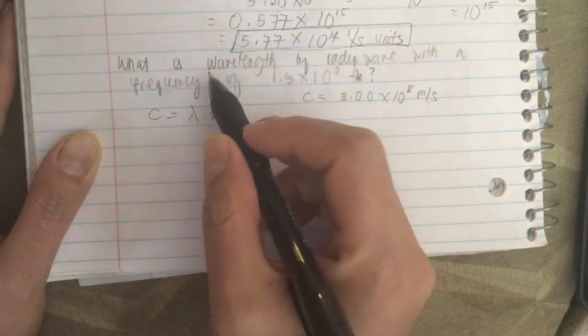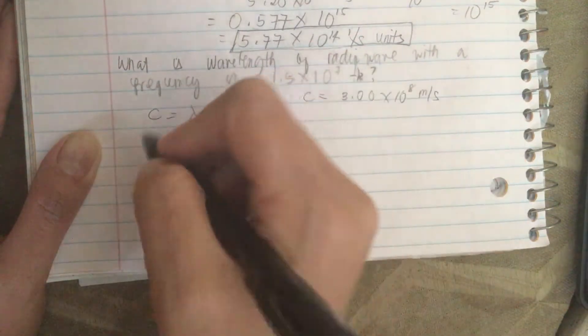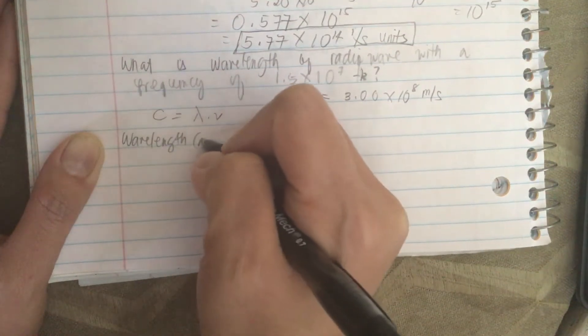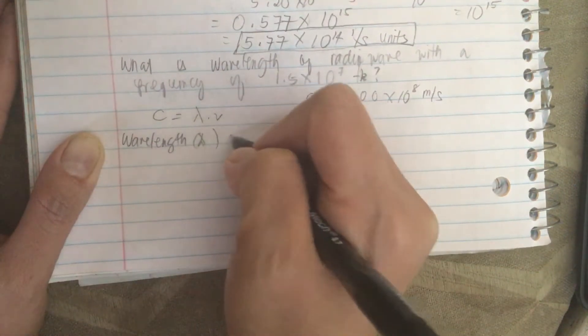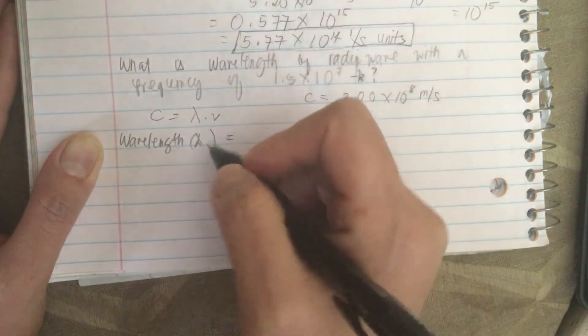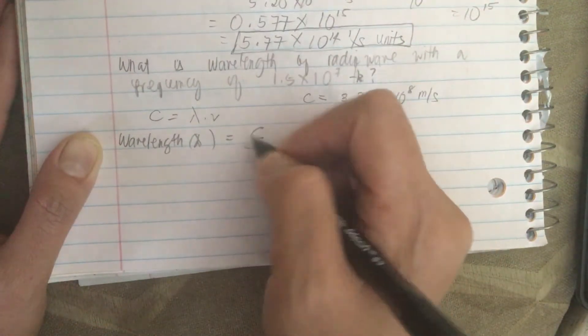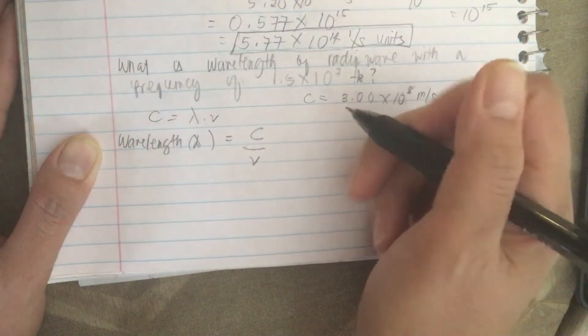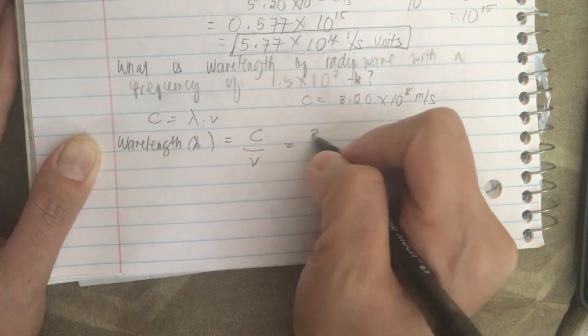So now they ask for the wavelength, so we solve this for lambda. Lambda is equal to C over nu or frequency.